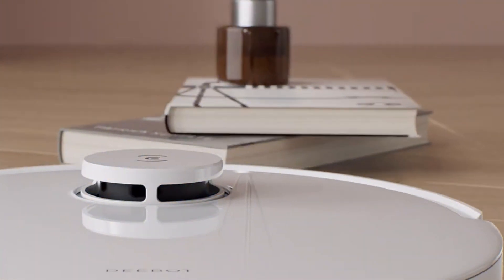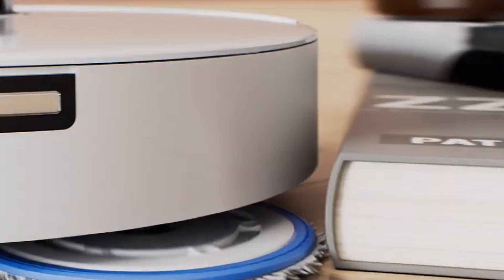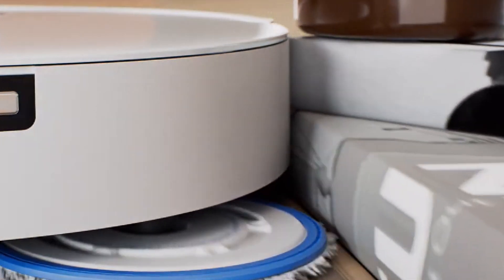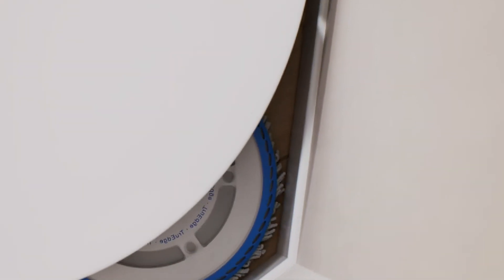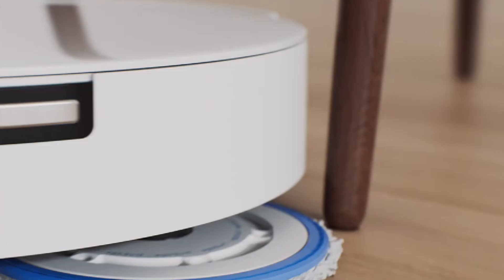Its smart home integration allows for seamless voice control, enabling users to start, stop, or schedule cleaning sessions with ease. Additionally, the vacuum may require manual intervention when it comes to dealing with tangled hair, which can be inconvenient for pet owners.